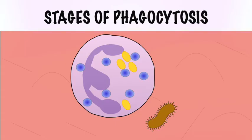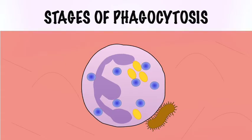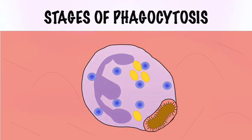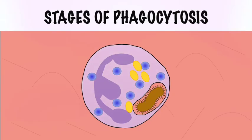Phagocytes bind to the surface of the pathogen. Cytoplasmic extensions called pseudopods start to form and surround the pathogen. The pseudopods then fuse at the distal end, forming the phagosome.